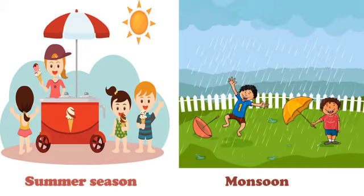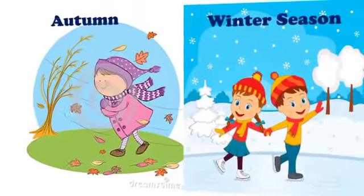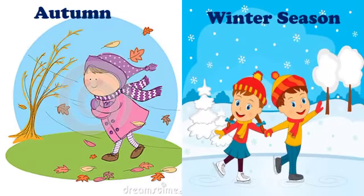Summer is the hottest time of the year, and it rains during monsoon. The weather is neither hot nor cold in autumn, and often cool wind blows during autumn. Many trees shed their leaves in this season.